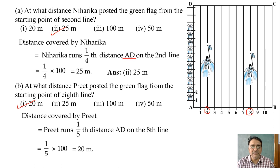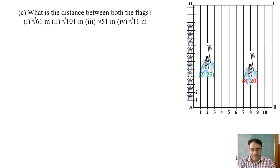So now we will move towards the third question. What is the distance between both the flags? So the green flag is at 2, 25 and the red flag is at 8, 20. So we will use the distance formula.